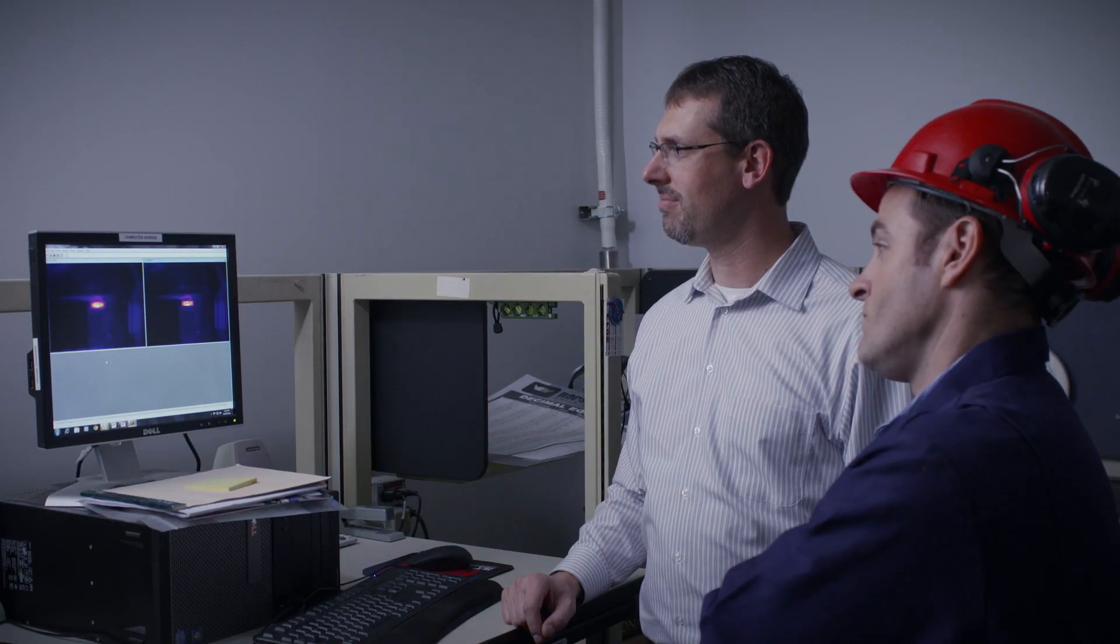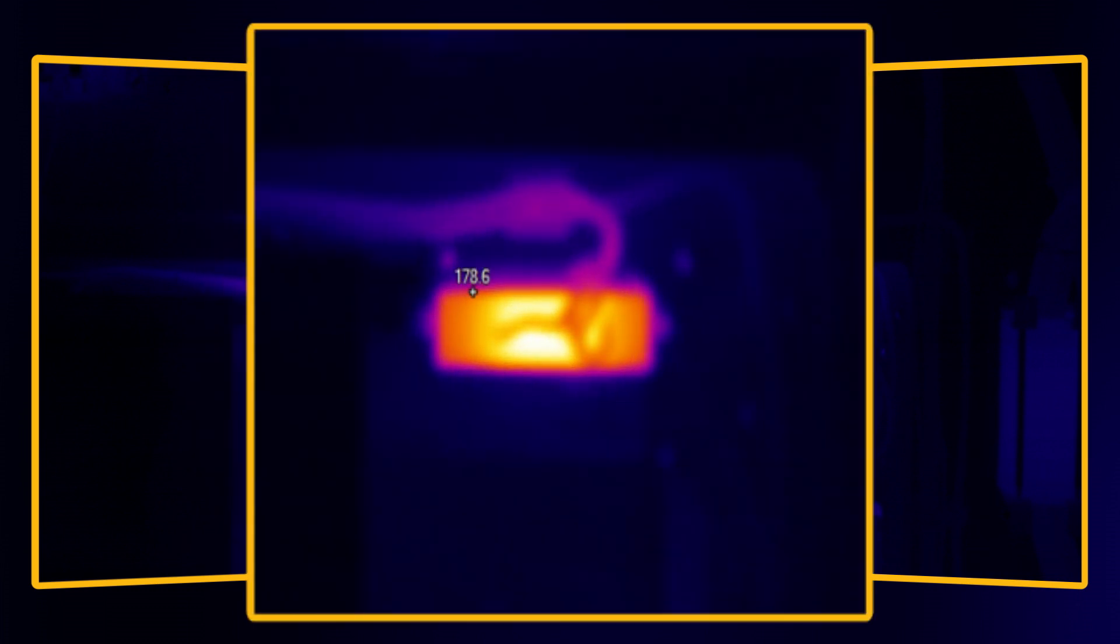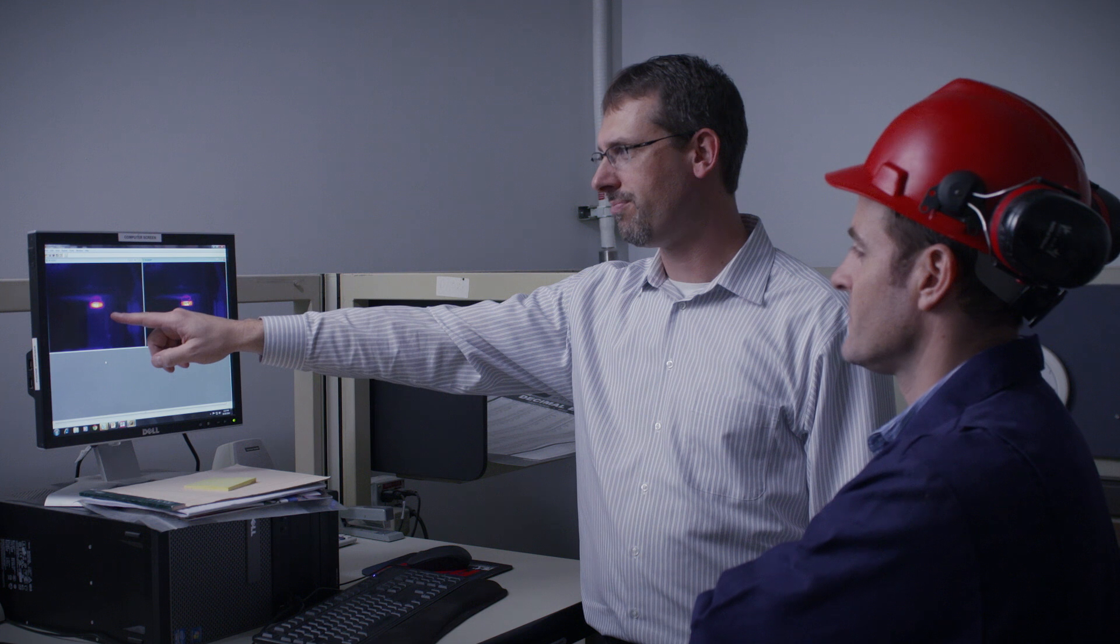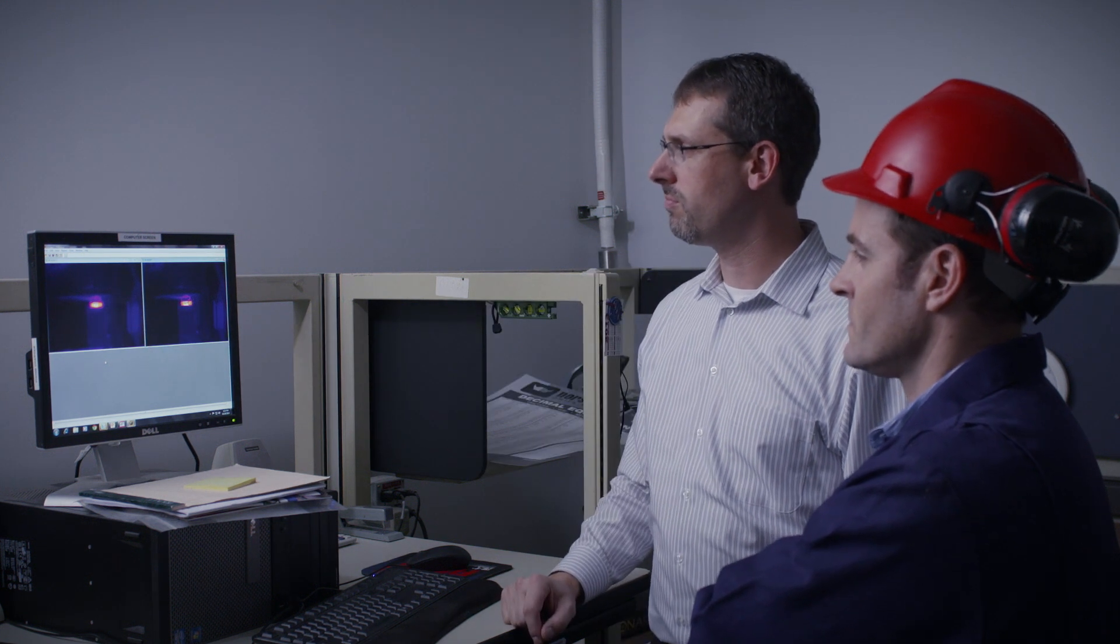Out-of-focus images can give you inaccurate temperatures. Look at the temperature of this component in this out-of-focus image. It shows a high temperature of 178.6 degrees. When in fact, in this in-focus image, it is 208.6 degrees. That's a 30-degree difference due to an out-of-focus image.